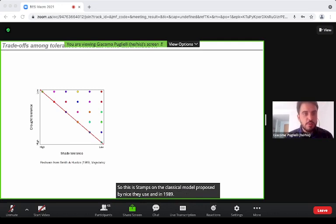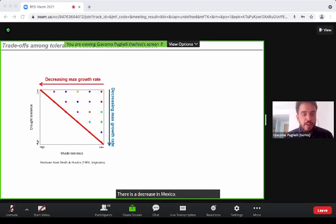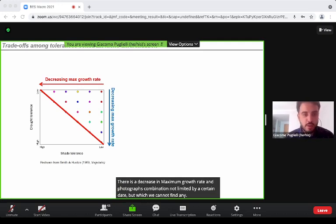The authors found that with increasing tolerance of either drought and shade, there is a decrease in maximum growth rate. Tolerance combinations are limited by a solid diagonal above which we cannot find any viable combination of tolerances.